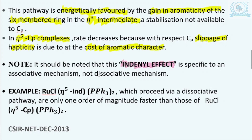In the CP case, aromaticity gets disturbed, and as a result the stability of the intermediate also decreases. This effect is known as the Indenyl effect — very interesting and important. Keep in mind that this goes through the associative mechanism, not the dissociative mechanism. Another example: complexes which are 18-electron species proceed via the dissociative mechanism or SN1 pathway, and in that case the reaction is found to be only about one order of magnitude faster compared to the CP analog.